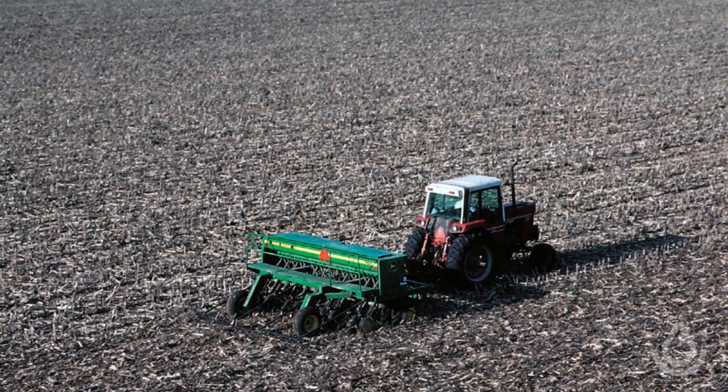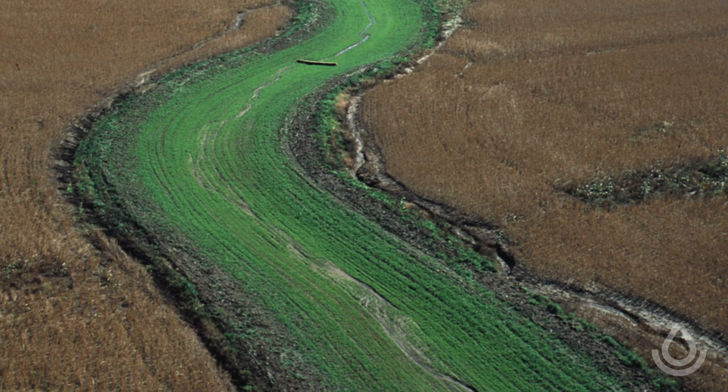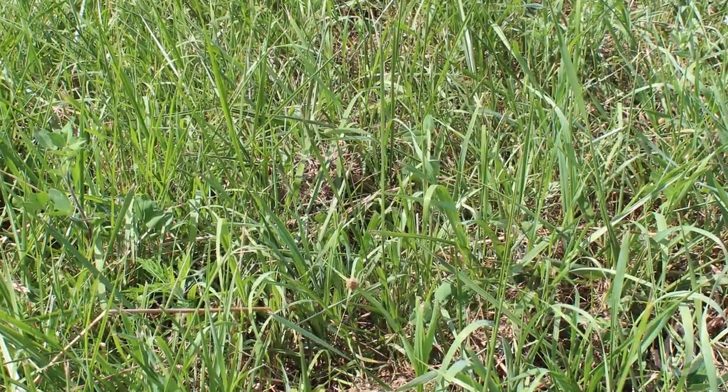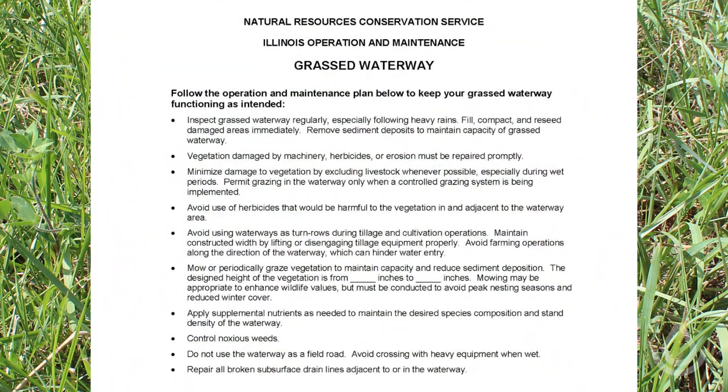Once the practices are built and the grass established, the heavy lifting on this practice is finished. However, for a conservation practice to perform well over time, the work doesn't end with construction — operation and maintenance is key to how well a practice functions throughout its design life and beyond. For instance, tillage and planting of crops in the field should be done perpendicular to the waterway, as planting and working the soil in the same direction as the waterway often results in water flowing along the outside of the waterway instead of into the grass, leading to erosion. Avoid overspray of herbicides into waterway vegetation, as herbicide can damage or kill vegetation. The height and density of the grass in the waterway is part of the waterway design — once established, it needs to be mowed at the height specified so water flows slow enough to prevent erosion but fast enough to prevent sediment from dropping out. Reviewing and following the operation and maintenance plan for any conservation practice is important.